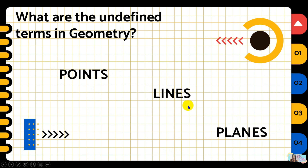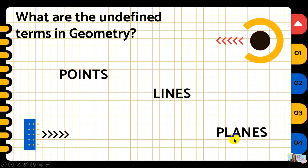They have no definition but we can describe them, and we can look at anything around us that can be a representation of these three undefined terms. Remember that points have no length, no width, no thickness, or no dimension at all. Lines have length but no width and no thickness, while planes have length and width but no thickness.